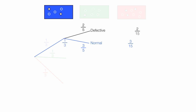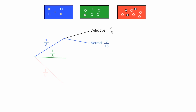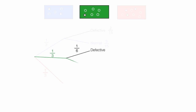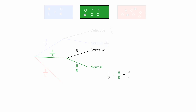I will do the same thing for the green box. Since there are six parts and one of them is defective, there's a one-in-six chance of getting a defective part from the green box. Since five of the parts in the green box are normal, there's a five out of six chance of getting a normal part. If I take these two branches from the green box and add them together, I get one-sixth plus five-sixths, which equals six-sixths, or one.